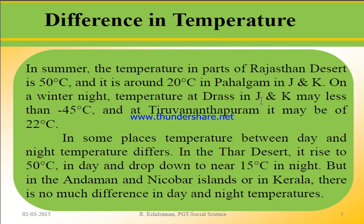On a winter night, temperature at Drass in Jammu and Kashmir may be less than minus 45 degrees Celsius, while in Thiruvananthapuram it may be just 22 degrees Celsius. Also, in the Thar Desert the temperature may rise to 50 degrees Celsius during the day and drop to near 15 degrees Celsius at night, while in the Andaman and Nicobar Islands and Kerala there is very little difference between day and night temperatures.